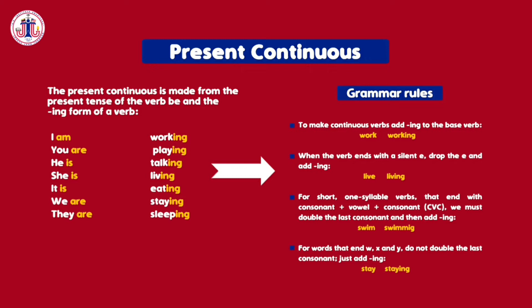For words that end in 'w', 'x', and 'y', do not double the last consonant — just add -ing. For example, the verb 'stay' — you only have to add -ing at the end.